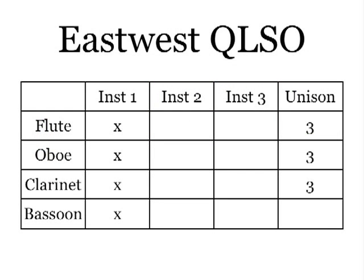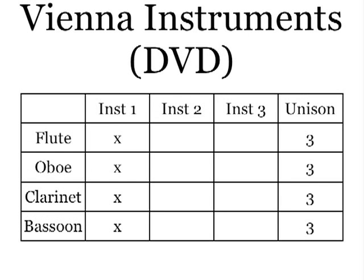For East-West QLSO, you have the solo instruments for the core section and three unison sections for flute, oboe, and clarinet. The clarinet ensemble fills in the missing gap from Sonovox and Westgate. Vienna is similar to QLSO, except Vienna recorded a unison bassoon ensemble.